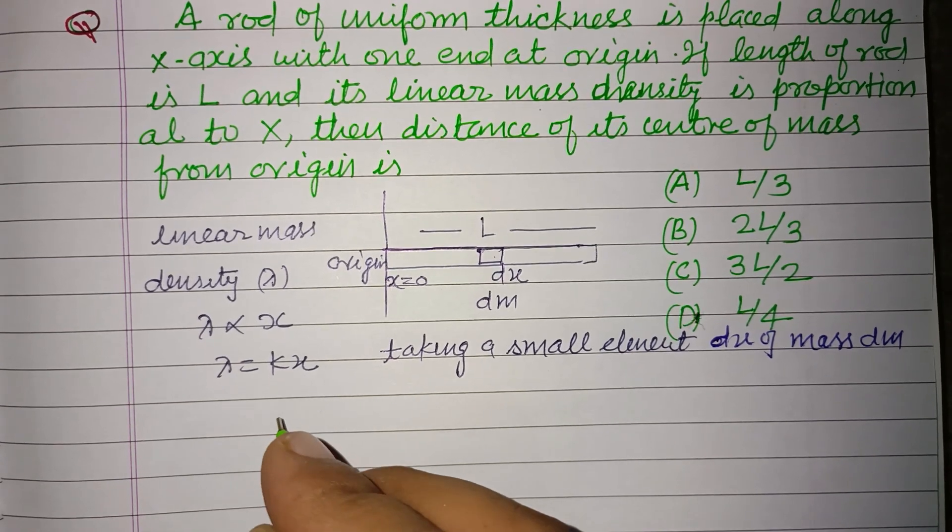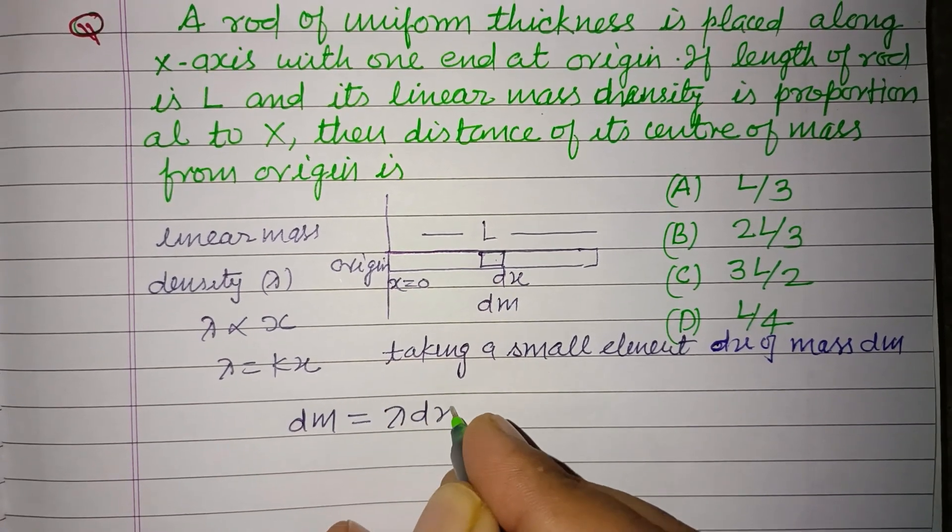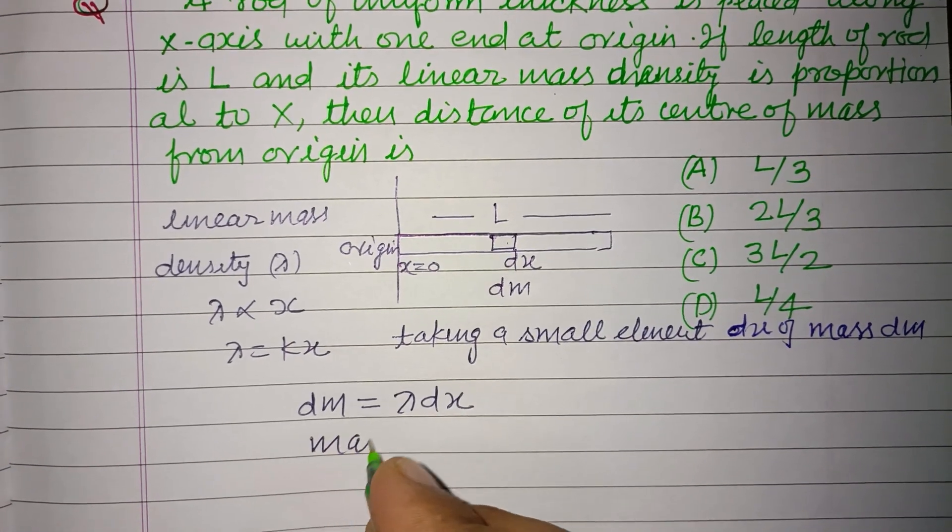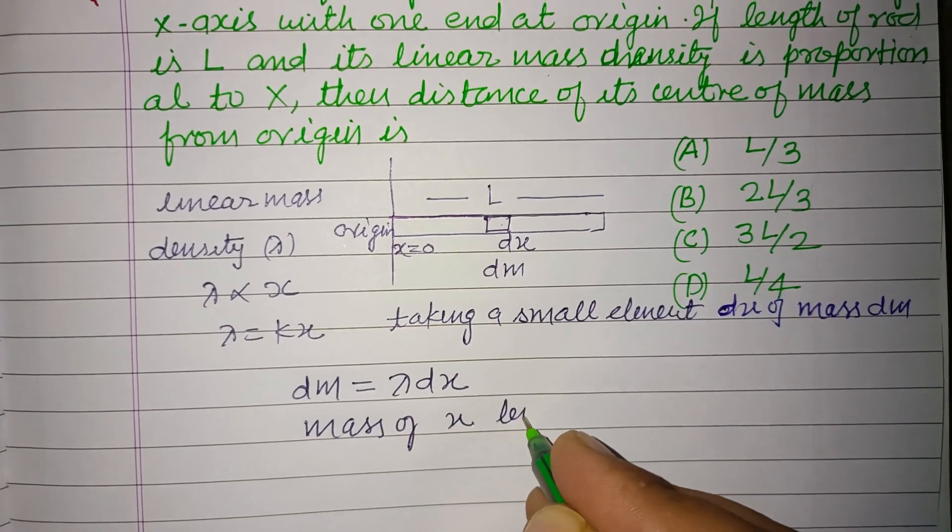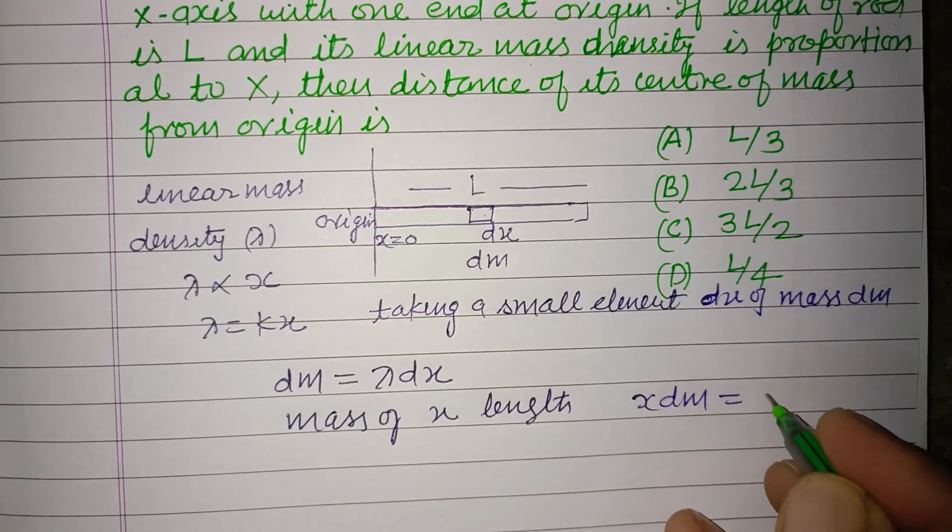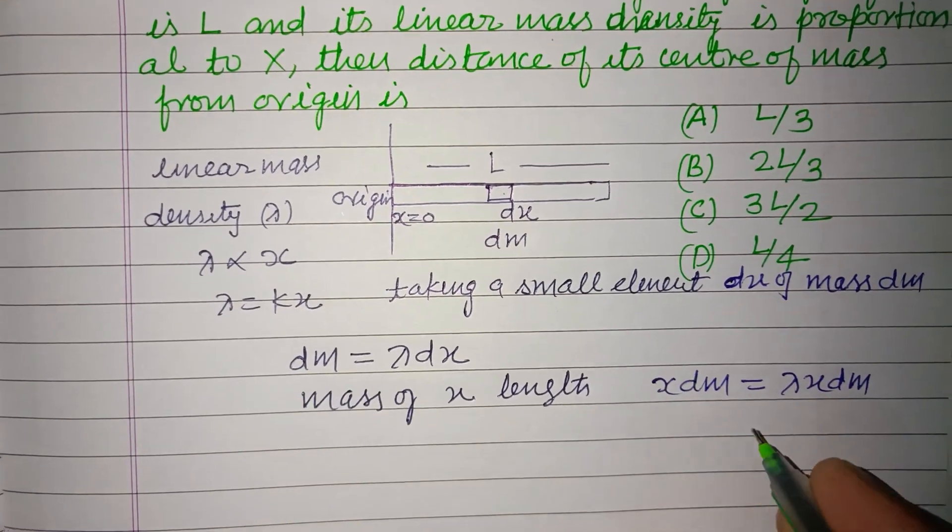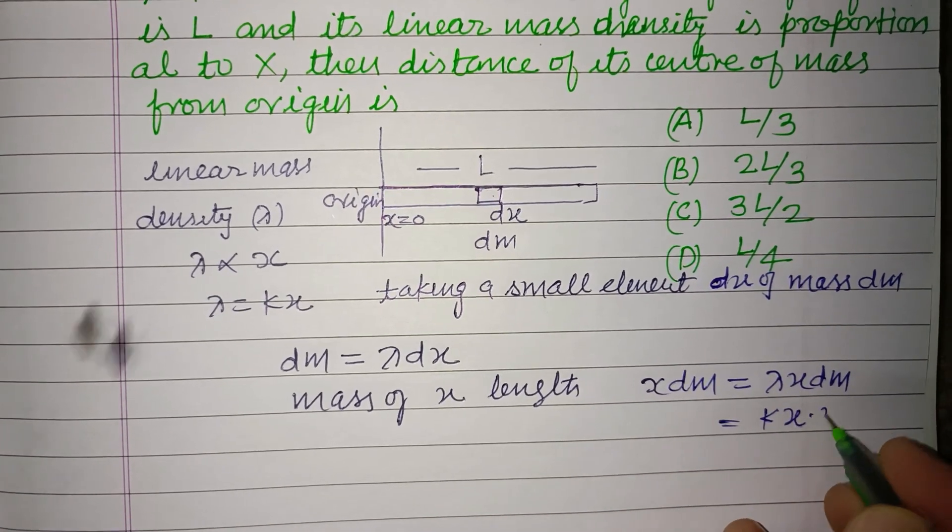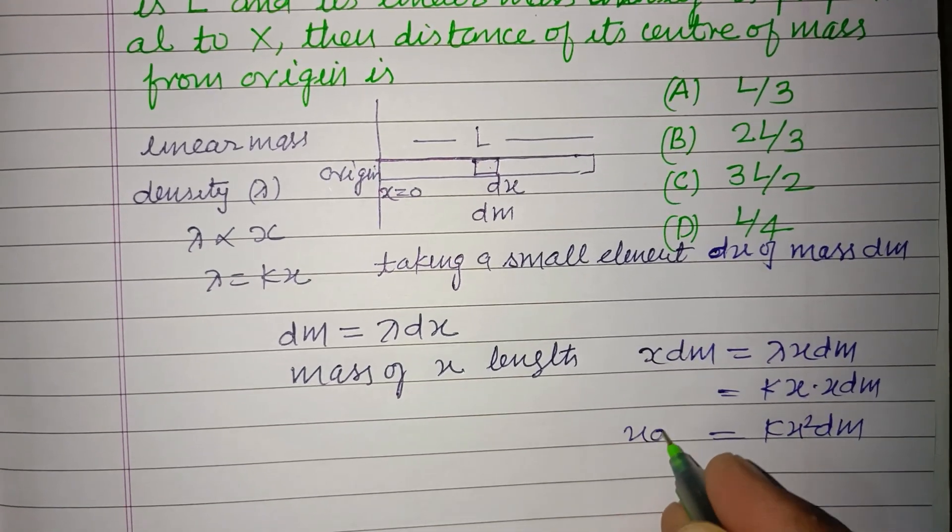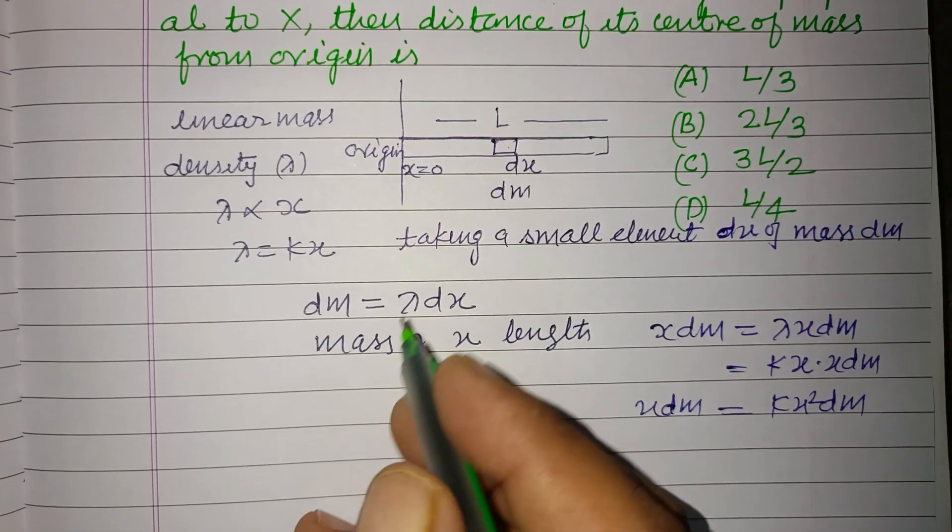Therefore, dm equal to lambda into dx. Mass of x length is xdm, that is lambda x into dm, and lambda is kx into xdm, so this is kx squared dx. xdm equal to kx squared dx.